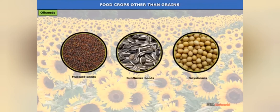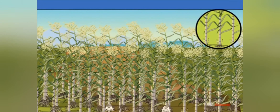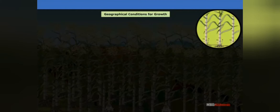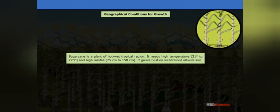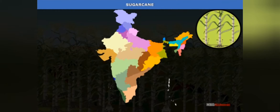Food crops other than grains include mustard seeds, sunflower seeds, and soybeans — these are called oilseeds, used for extracting oil. Next is sugarcane: it is both a tropical and subtropical crop. It grows well in hot and humid climates with temperatures between 21°C and 27°C, and requires annual rainfall between 75 cm and 200 cm. In low-rainfall areas with irrigation, the sugarcane variety needs good soil conditions and manual labor from sowing to harvesting.